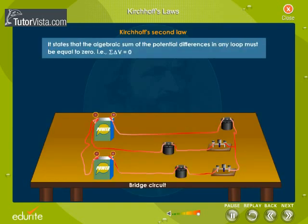Kirchhoff's Second Law states that the algebraic sum of the potential differences in any loop must be equal to zero. That is, the sum of the EMF of the sources of energy in the circuit and the potential drop across the resistive elements is equal to zero.